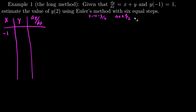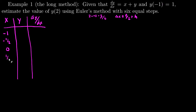I like the delta x notation, though references often call this variable h, for step size. So with a step size of one half, my x-values are: negative 1, negative one half, 0, one half, 1, three halves, and 2.